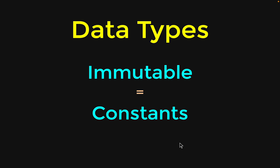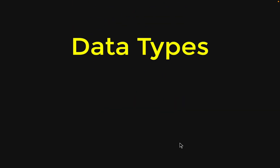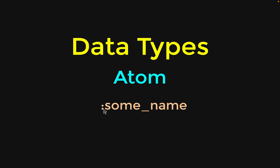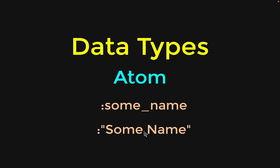With this concept in mind, let us go ahead and study the first data type, which is called an atom. An atom in Elixir looks something like this — we have a colon symbol, and after the colon we have the name of the atom. In case there is a space inside the name, we write the atom with a colon followed by the name in double quotes.